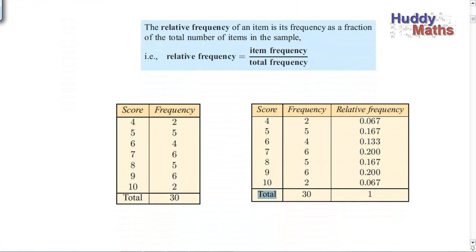The first thing we're going to do is look at changing the way we look at frequency tables. Remember what a frequency table is? You would have some scores, and then the number of times — the frequency — with which each score occurred. So you could make up a fraction, a relative frequency: a frequency as a fraction of the total number of items. Item frequency over the total frequency.